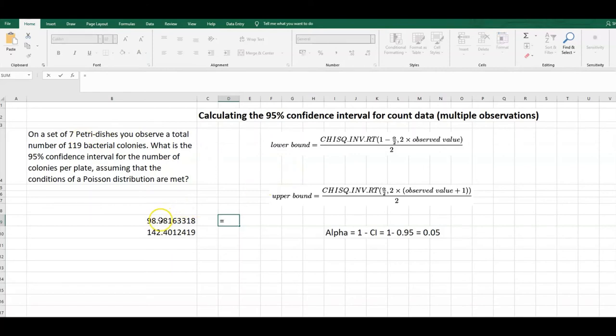Equals this value divided by seven, and we do that for this value as well, divided by seven because we've got seven petri dishes. So we've got between 14 and 20 colonies per petri dish.